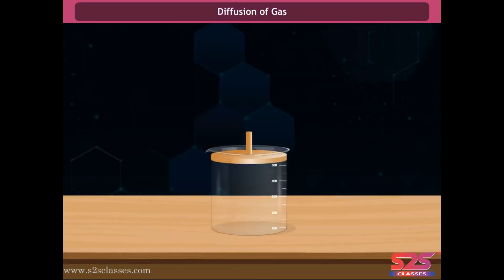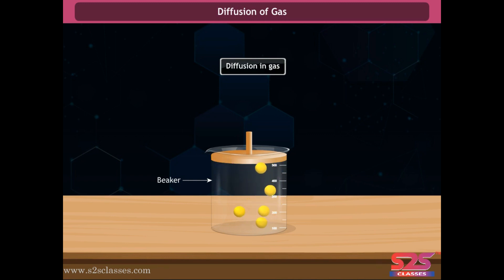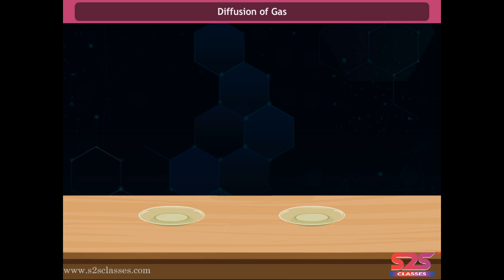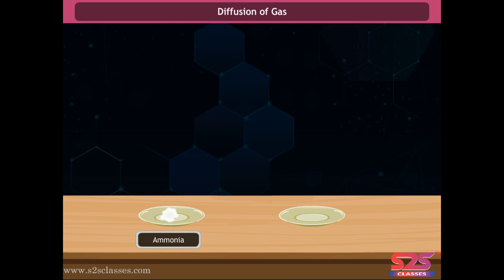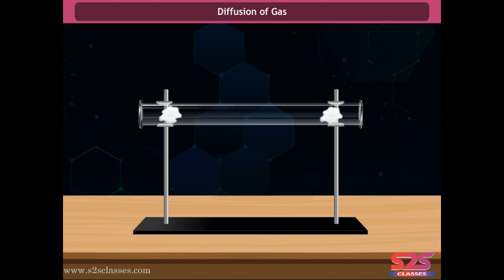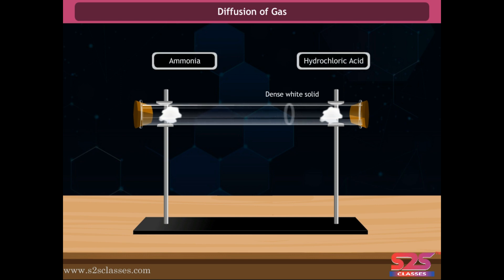Diffusion of gas: the particles in a gas move randomly in all directions, which helps explain why diffusion takes place in gases. Soak a piece of cotton wool in ammonia solution to provide ammonia gas, and soak another piece in hydrochloric acid solution to obtain hydrochloric gas. Plug these two cotton wools in the two ends of a hollow glass tube and plug quartz in both ends. In less than a minute, a white ring begins to form — a dense white solid formed by the diffusion of ammonia and hydrogen chloride gases.